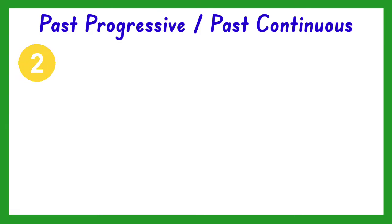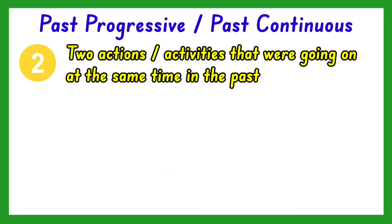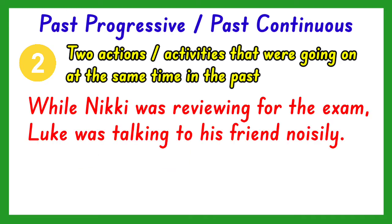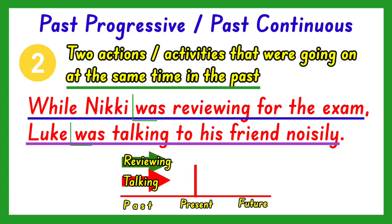We also use the past continuous form of the verb for two actions that were happening at the same time in the past. For example, while Nicky was reviewing for the exam, Luke was talking to his friend noisily. In this case, the two events were happening at the same time in the past, so both verbs are in the past progressive form.